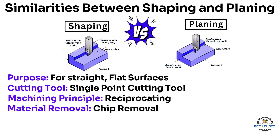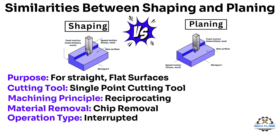Material removal: Both processes are used for removing material from workpieces in the form of chips, unlike non-conventional machining processes. Operation type: Both are interrupted cutting operations, meaning the cutting tool engages and disengages the workpiece periodically.